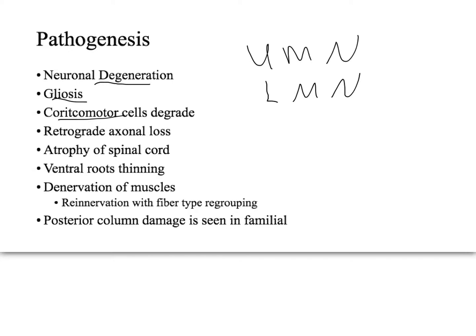A few other things that happen: you get atrophy of the spinal cord and the ventral roots, and you get muscles with de-innervation as well as re-innervation due to fiber-type regrouping.